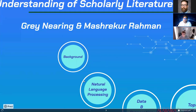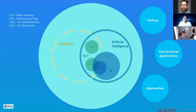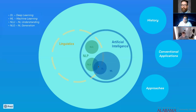Our work lies at the intersection of natural language processing and hydrology. If you consider computational linguistics and artificial intelligence, natural language processing lies somewhere in the middle — there's natural language understanding and natural language generation. When you consider natural language understanding, we have an intersection with deep learning and machine learning. That's the part we're interested in.